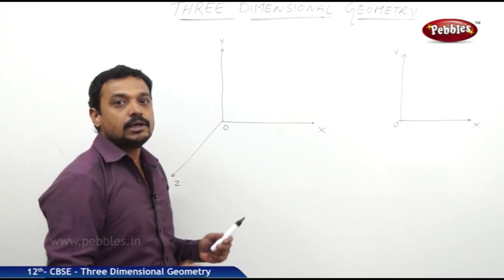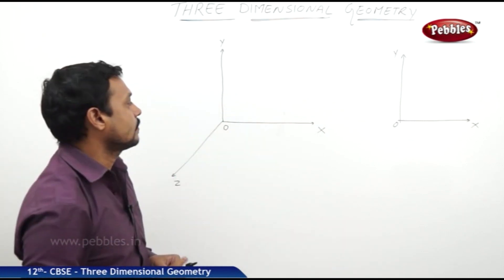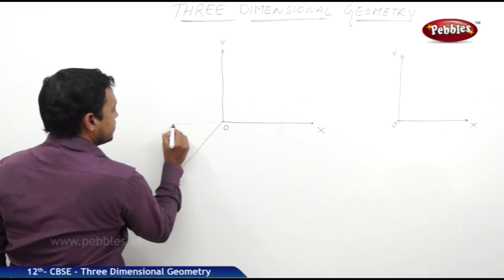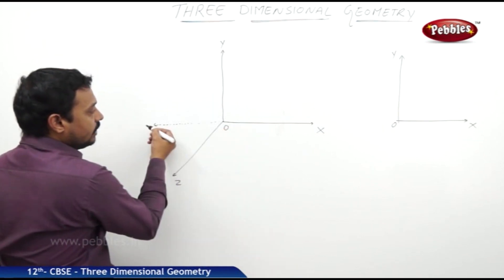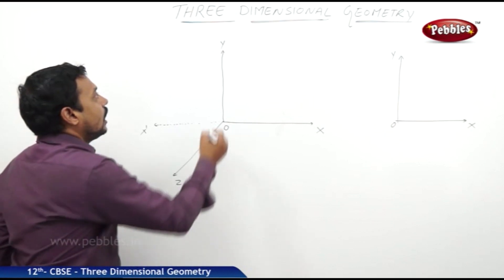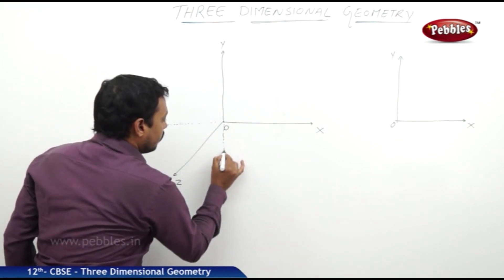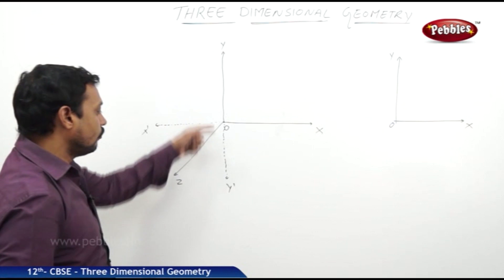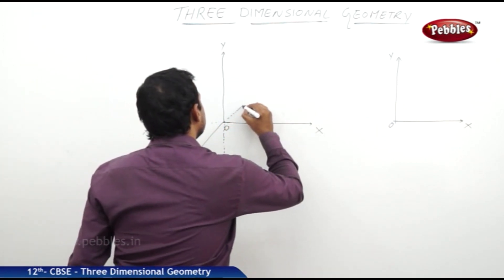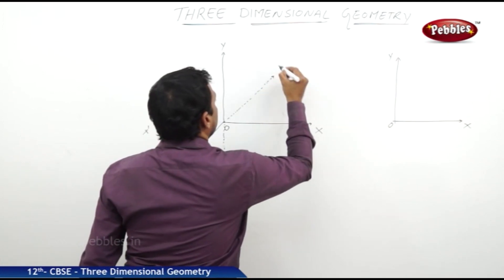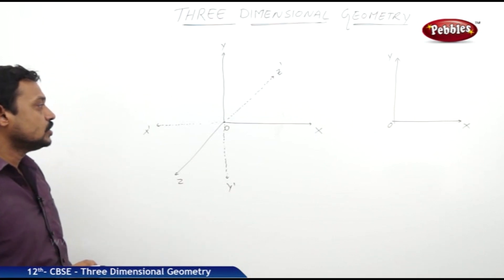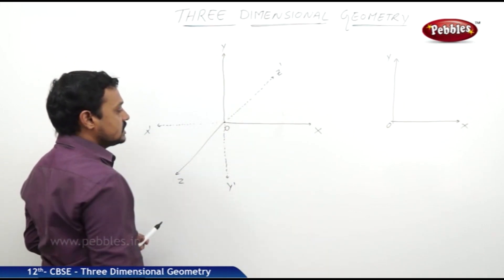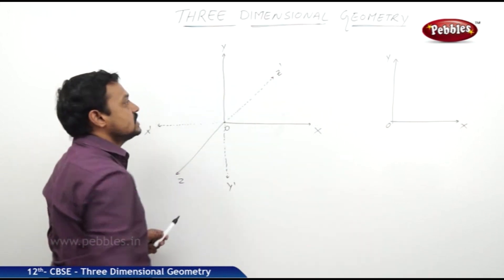So there are three coordinate planes: xy, yz, and zx. Further extension of these three coordinate axes gives negative directions. The negative direction of the x-axis is called x′, the negative direction of the y-axis is y′, and the further extension of the z-axis gives z′. So x′Ox is the x-axis, yOy′ is the y-axis, and zOz′ is the z-axis.